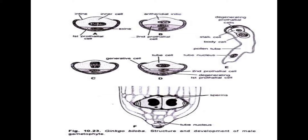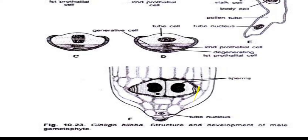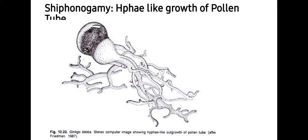This is a similar trait shared by Ginkgoales and Cycads — both are considered living fossils in gymnosperms, and in both cases you will find flagellated sperms. Here you can see developmental changes in the pollen grain, and finally two multi-flagellated sperms are produced. These sperms are carried to the female gametophyte through the pollen tube.